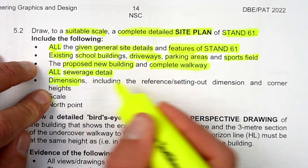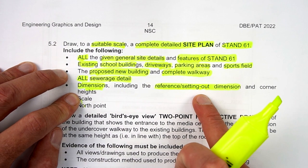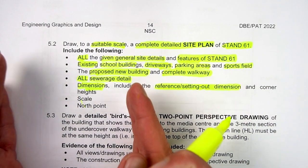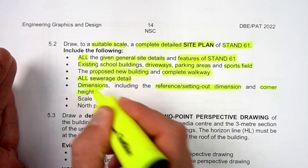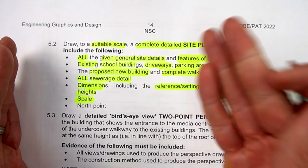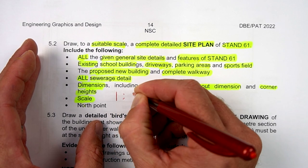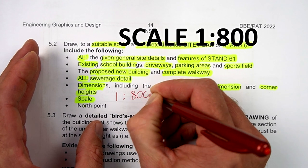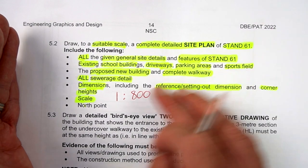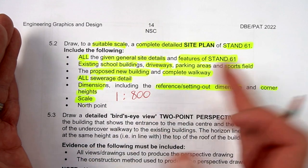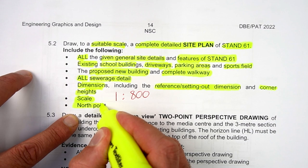Add dimensions including the reference and setting-out dimensions — those are the dimensions a contractor will use to position the building at the correct spot. The corner rights must be shown, and your scale must be done correctly. Here's the tip of this video: a scale of 1 to 800 will be more than adequate to fit your site plan onto an A3 sheet in landscape orientation.